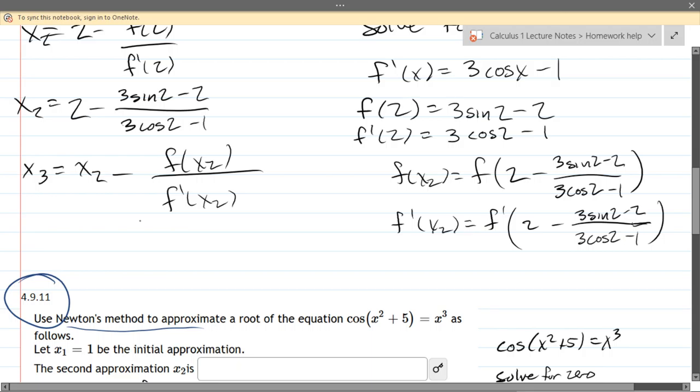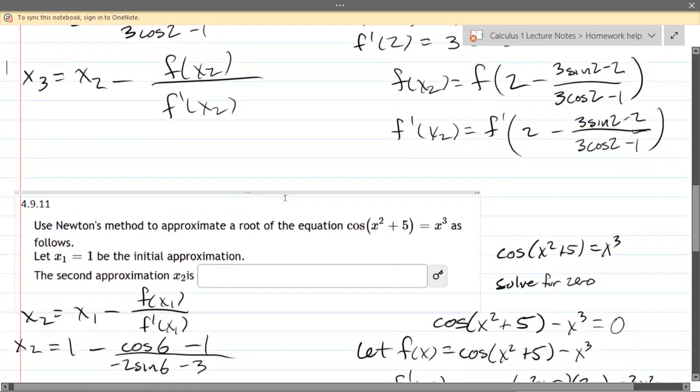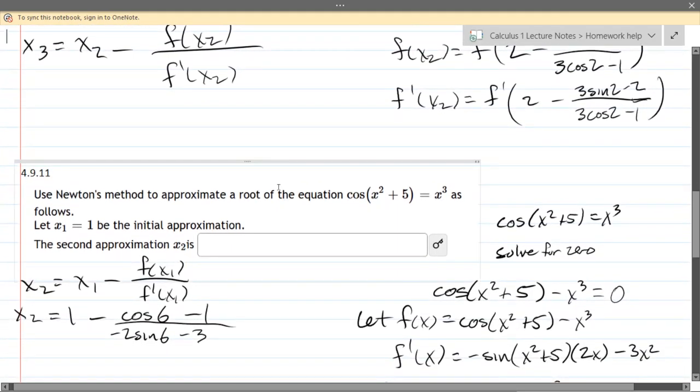Now this time, we have a much more complicated equation here. We have cosine of not just x, but cosine of a function of x equals x cubed. So we're going to do the same thing we did before. We've got to solve for 0. I'm just going to subtract the x cubed to the other side.